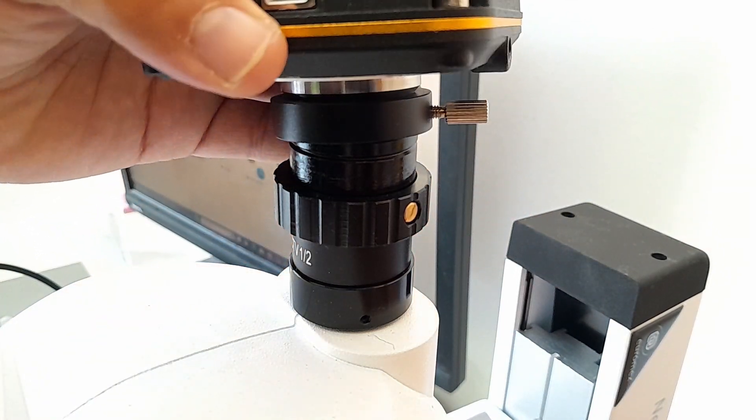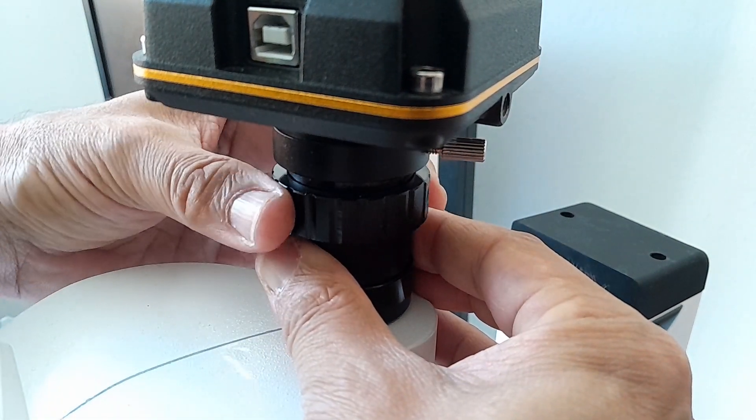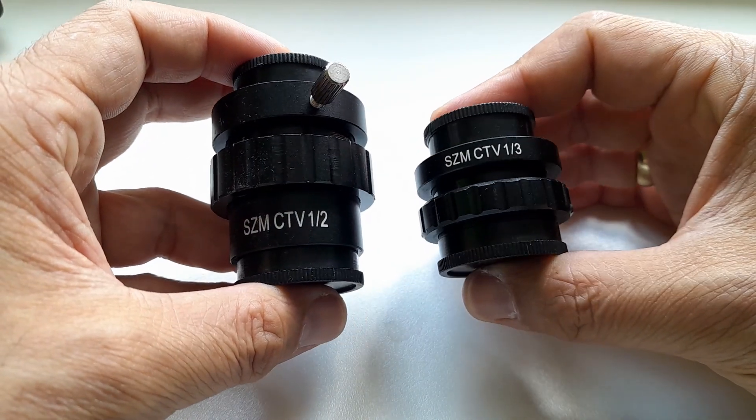The whole setup becomes much more compact this way, and par-focality can now be adjusted by rotating a focusing ring on the adapter. Depending on the size of the camera sensor, you of course need to connect an adapter of the correct magnification.